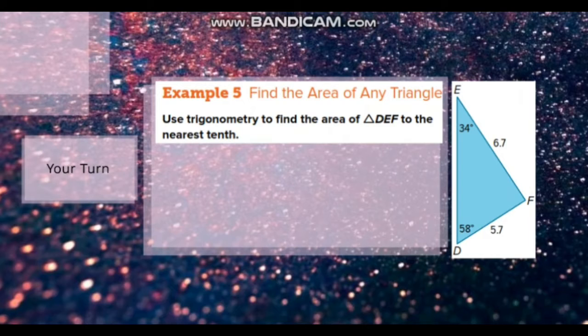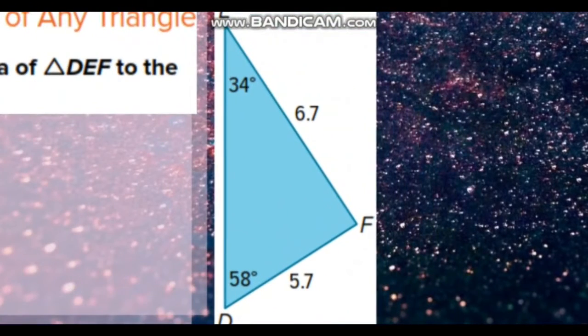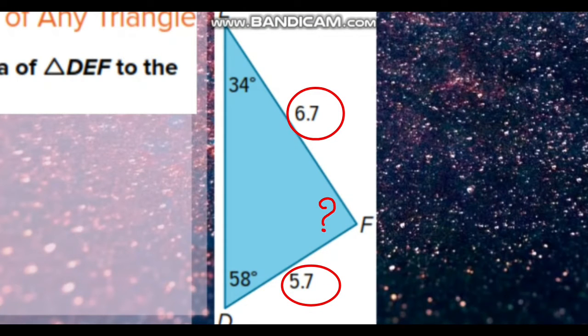Another example. Use trigonometry to find the area of triangle DEF, given two sides and two angles. But as you see here, the angle included between the two sides is not given.